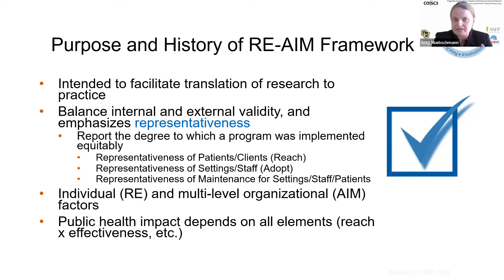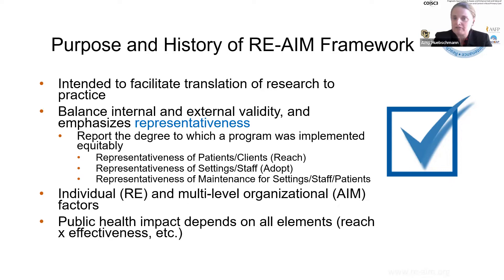What's the representativeness of patients and clients who are reached, of settings and staff that adopt, of maintenance for settings, staff, and patients? That's always been explicitly expected to be reported. It's got the individual factors of reach and effectiveness, and then the multi-level organizational factors. The public health impact depends on all of those elements.